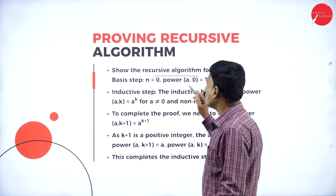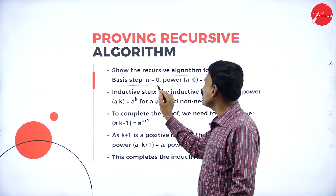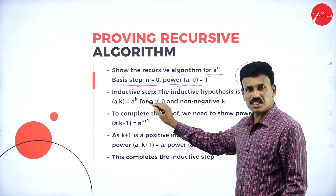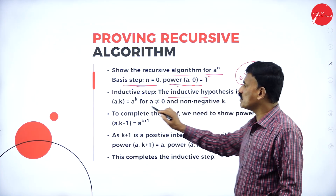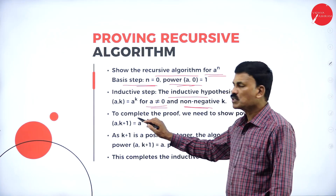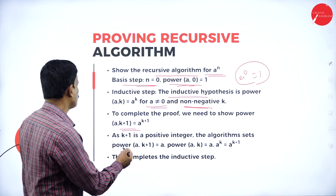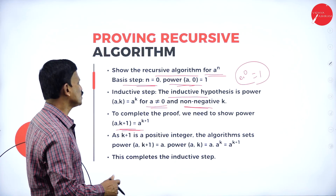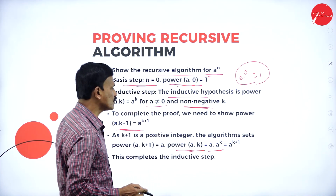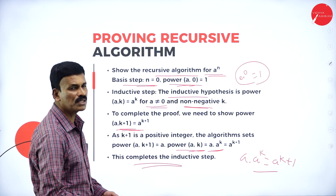Show that the recursive algorithm for a to the power of n is correct. Basic step: if n = 0, then power(a, 0) = 1, that is a to the power of 0 = 1. Inductive step: the inductive hypothesis is power(a, k) = a^k for a ≠ 0 and non-negative integer k. To complete the proof we need to show power(a, k+1) = a^(k+1).